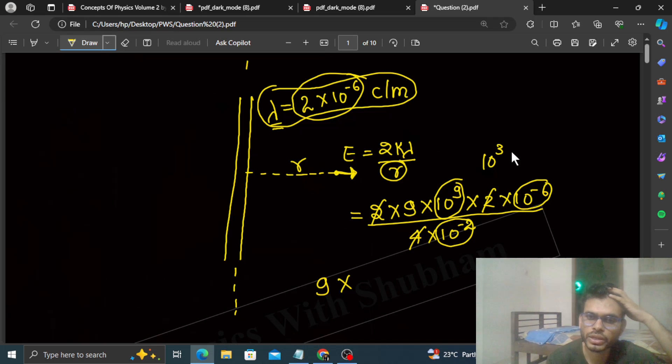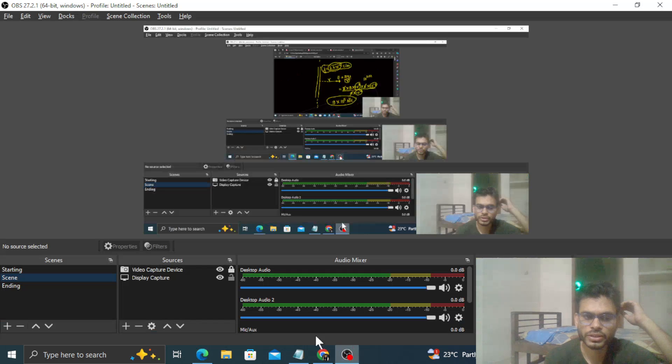3 plus 2 gives 10 raised to the power 5. The unit of electric field is newton per coulomb. I hope you understood.